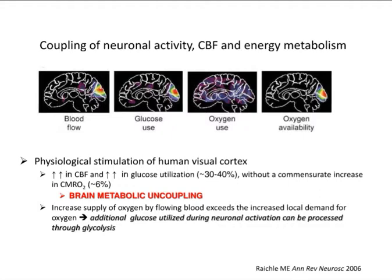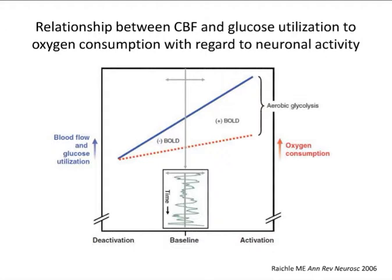This is what we call brain metabolic uncoupling, meaning there is an increased supply of oxygen by flowing blood which exceeds the increased local demand for oxygen, so there is additional glucose utilized during neuronal activation that can be processed through glycolysis. When blood flow and glucose utilization increase, glucose goes up higher — accounting for aerobic glycolysis, also called hyperglycolysis — more than oxygen consumption.